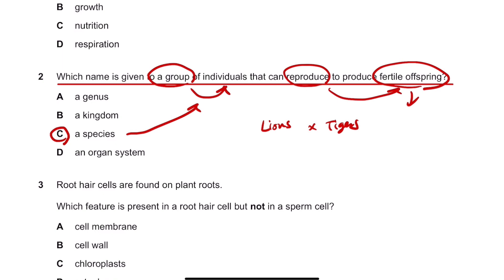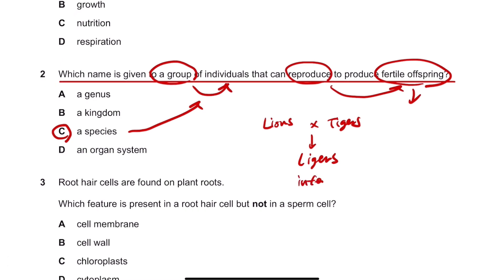When this happens, they give birth to the ligers or tions. Ligers are infertile, which means they can't give birth to the babies, the offsprings. That's why the lions and tigers are not the same species.